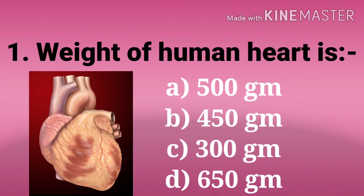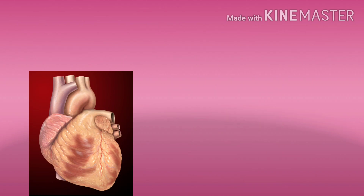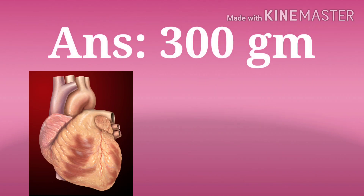The first question is: weight of human heart is. The options are 500 gram, 450 gram, 300 gram, 650 gram. And the answer is 300 gram. The weight of human heart is ranging from 250 to 330 gram. The average is 300 gram.